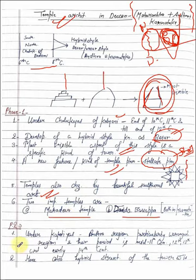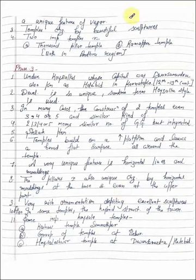Phase 2 under Kakatiyas, Kakatiya rulers. In Andhra region, particularly Warangal region, their period is mid 11th century, 12th, 13th, and early 14th century. Here is hybrid structure of the tower which is unique feature of Vesara. Temple characterized by beautiful sculptures. Two main temples here: Thousand Pillar temple and Ramappa temple, both in Andhra region.